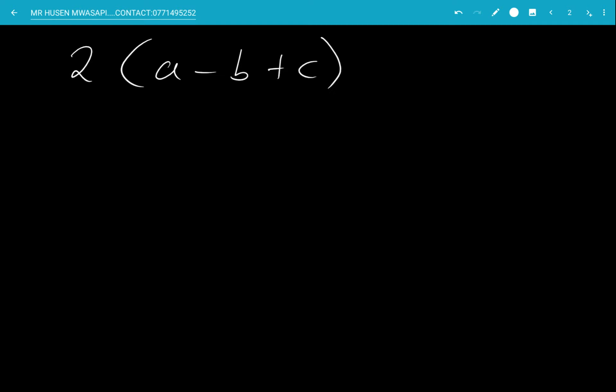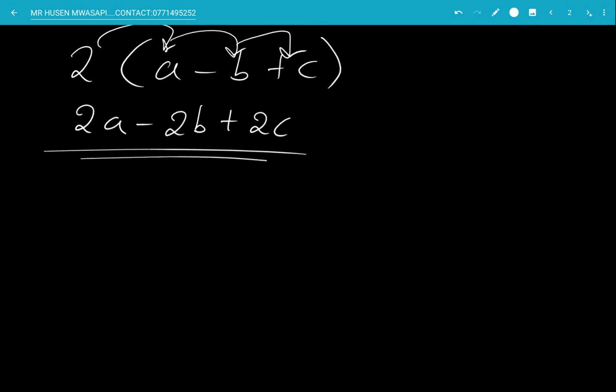The number that is outside the brackets is the one that multiplies everything within. So whatever is just before the particular brackets is what expands everything inside. For example: 2 times A is 2A; 2 times negative B is negative 2B; 2 times C is positive 2C. Since B and C are not the same, that is the final answer.